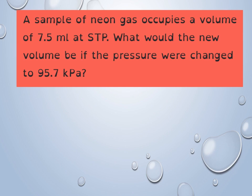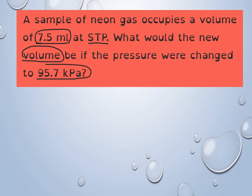Let's look at a sample problem. A sample of neon gas occupies a volume of 7.5 milliliters at STP. What would the new volume be if the pressure were changed to 95.7 kPa? We need to identify the information given: 7.5 milliliters, STP, a new volume to find, and a pressure of 95.7 kPa.